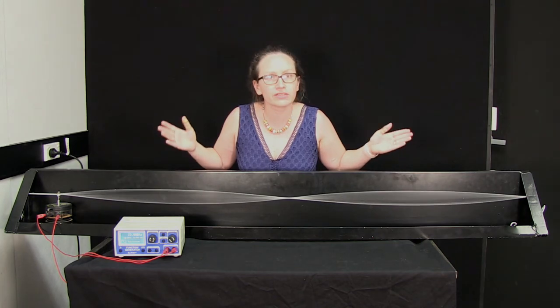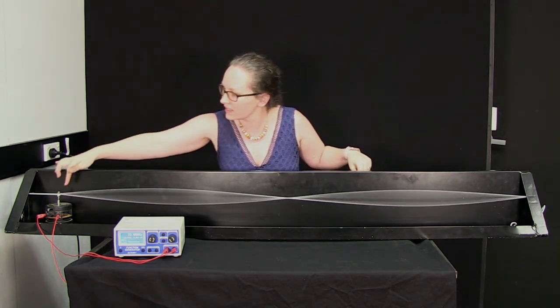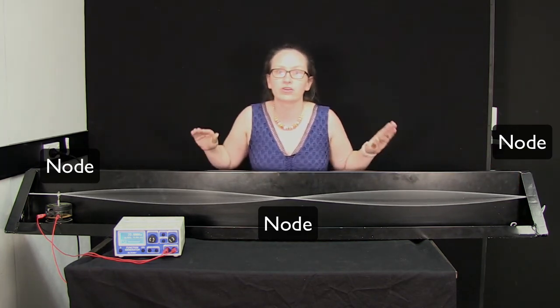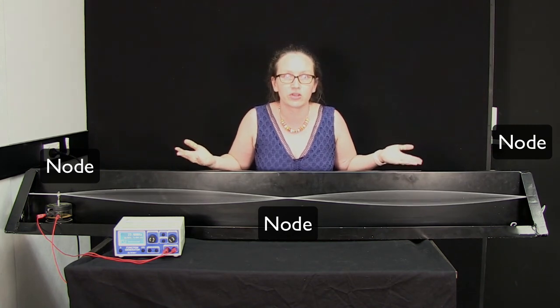You do need to know the names of some parts of a standing wave. These bits where the string is stationary are known as nodes. They're the places where the amplitude of the motion is zero.